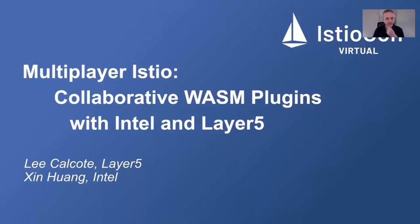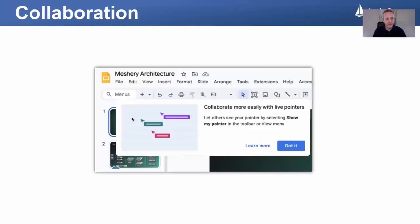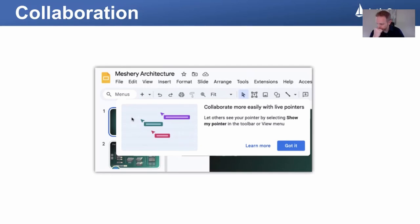Multiplayer Istio, Collaborative Wasm Plugins. That's right. It was about an hour before — well, right now — I was cleaning up some slides. And while doing so, Google Slides said there's a new feature: you can collaborate more easily with live pointers. I thought, how true is that? That's very true. And I think it's pretty evident why that's true.